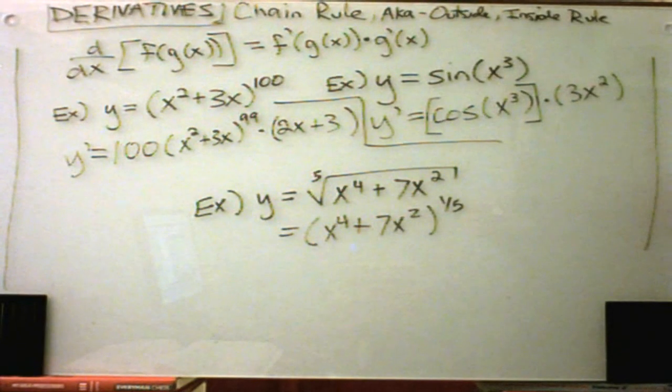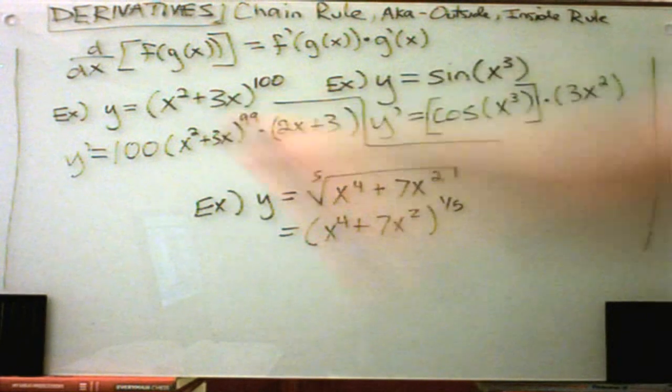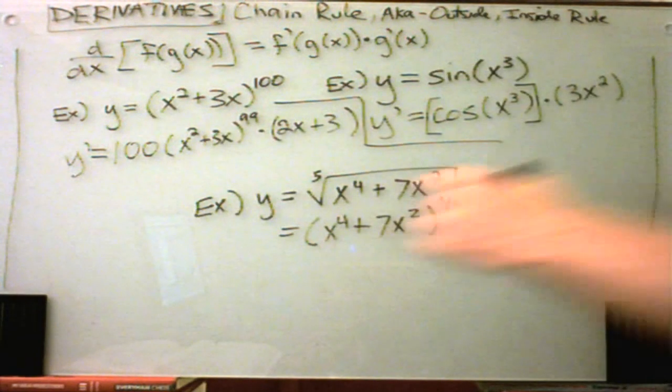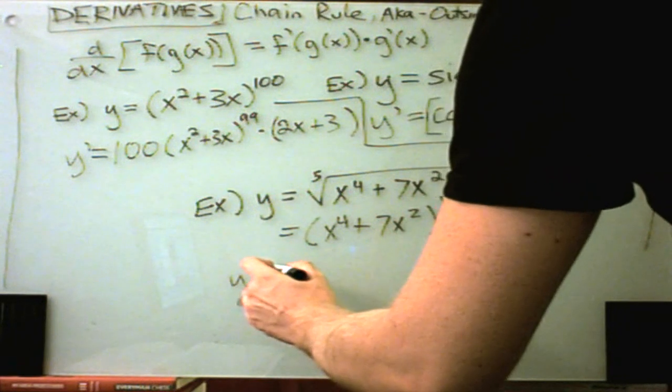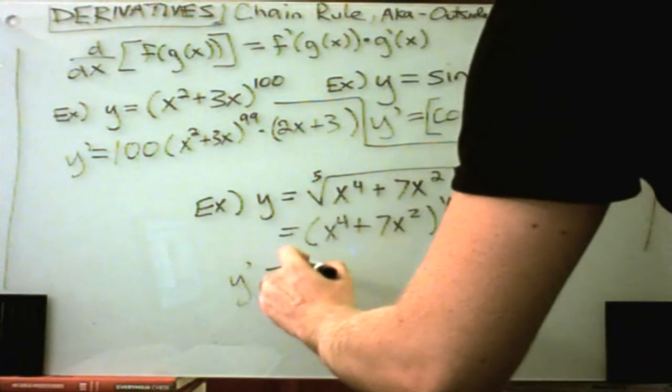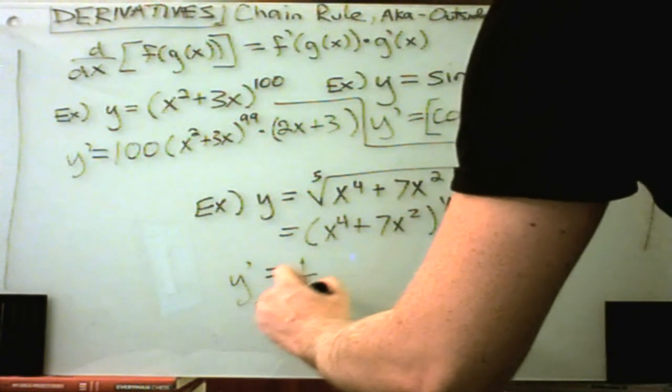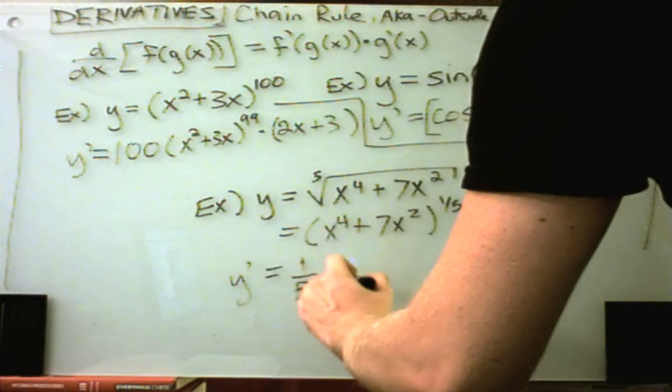And now we're basically back to the problem we had just a second ago. So just like before, y prime, the one-fifth will come out front. I'll leave the inside alone.